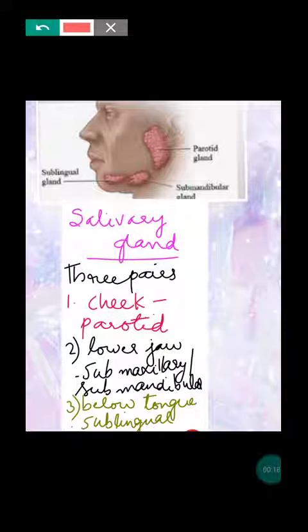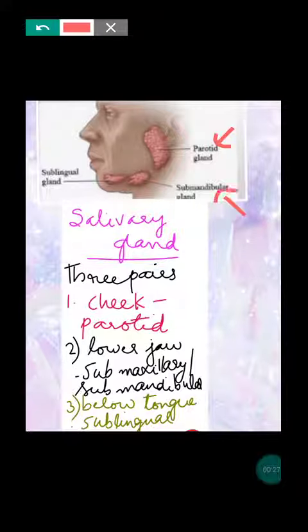One is present in the cheek region, known as the parotid. The second one is present in the lower jaw, known as the submandibular or sub-maxillary. The third one is present below the tongue, known as the sublingual gland. These are the three different types of salivary gland.